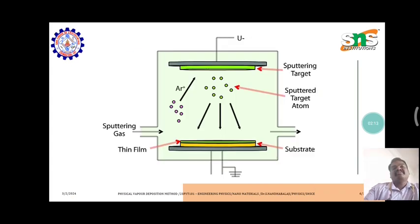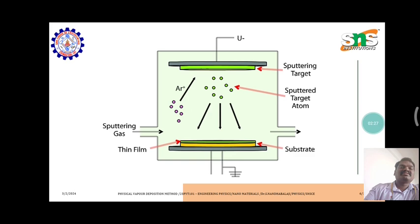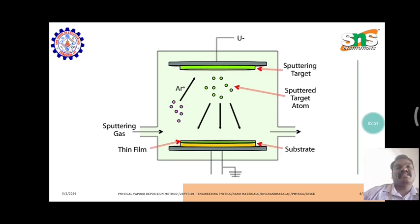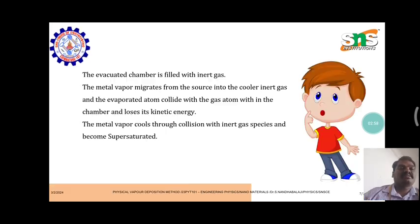This is the schematic diagram of vacuum evaporation techniques. The sputtering target is fitted in the upper portion of the material, and the thin film substrate is placed in the substrate place. The sputtering gas is directed toward the thin film. High vacuum and high temperatures are used. The target is bombarded at the sputtering place, and the atoms are sputtered and coated onto the thin film substrate. The evacuated chamber is filled with inert gas.